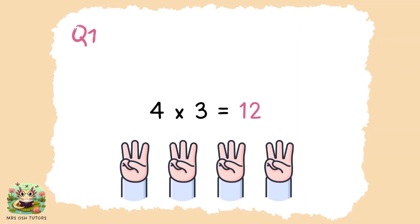Question one: four times three equals 12. There you can see four groups of three fingers. If you add all those fingers up, there will be 12.